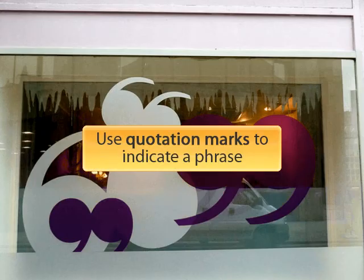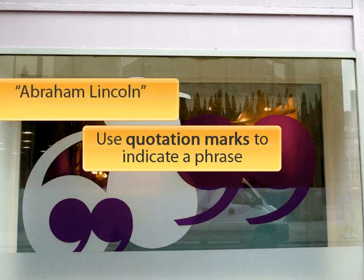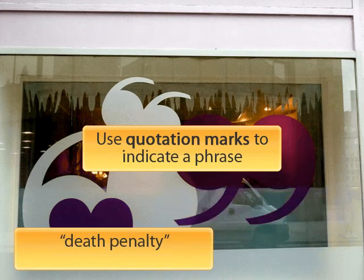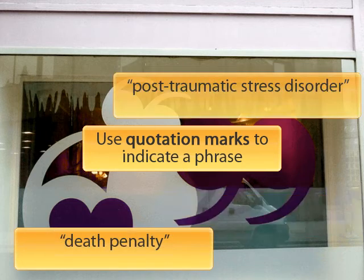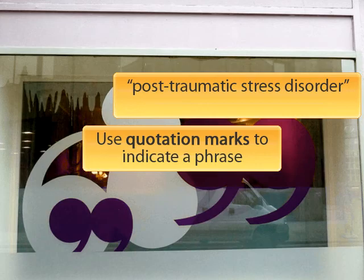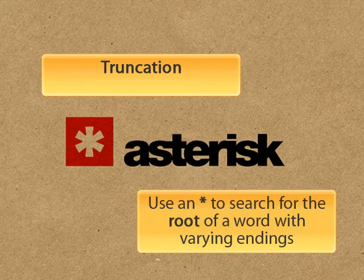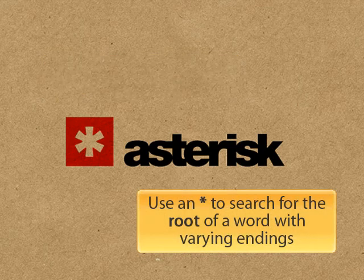Use quotation marks to indicate a phrase. Truncation: use an asterisk to search for the root of a word with varying endings.